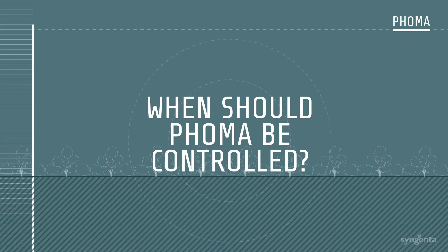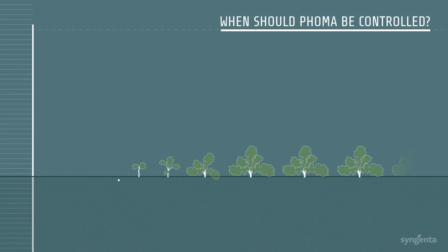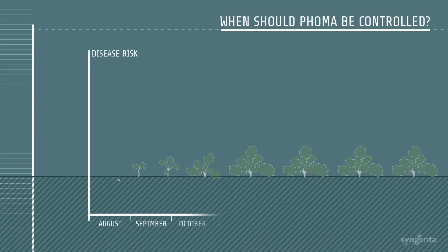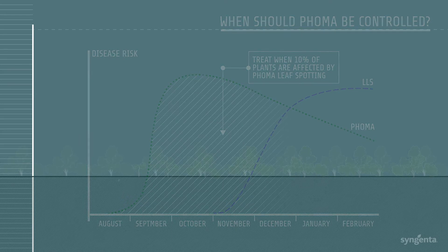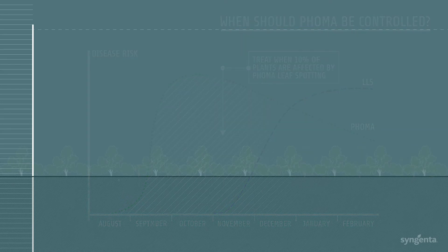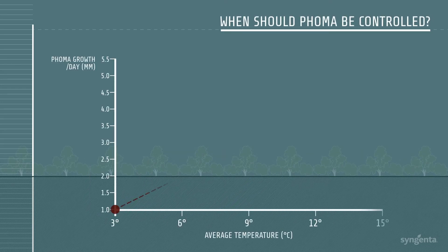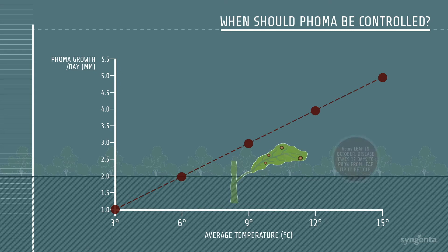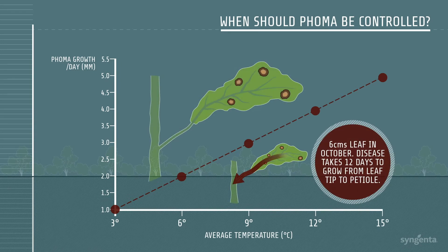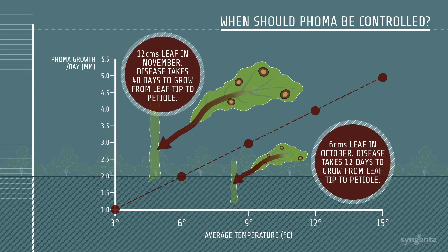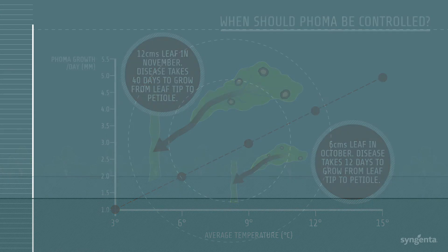FOMA is the first disease affecting the crop in the autumn. You should treat when 10% of plants are infected, which generally happens in early to mid October. Interestingly, data from the 2016 FOMA alert shows that on average FOMA thresholds were reached 92 days before the first light leaf spot symptoms were seen, highlighting the importance of early FOMA control.